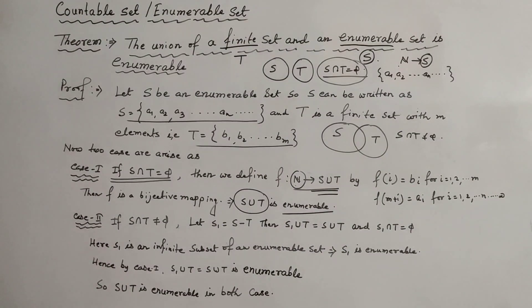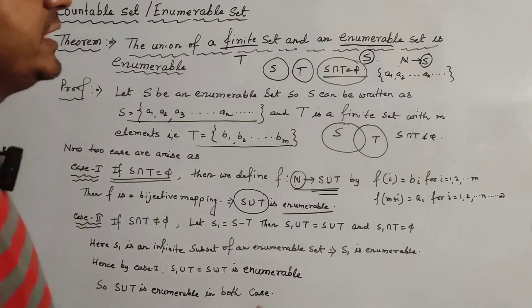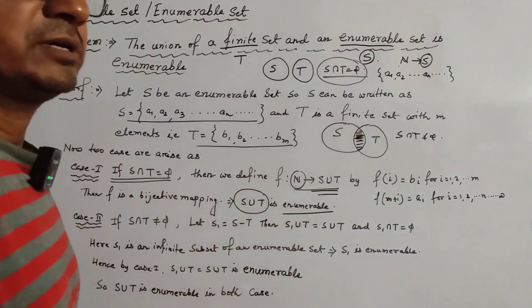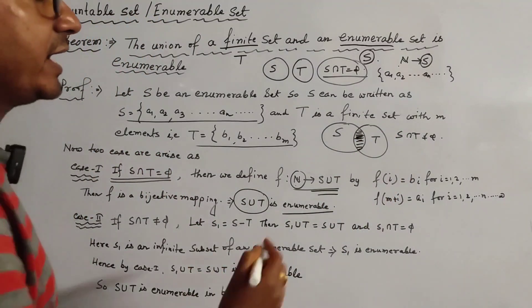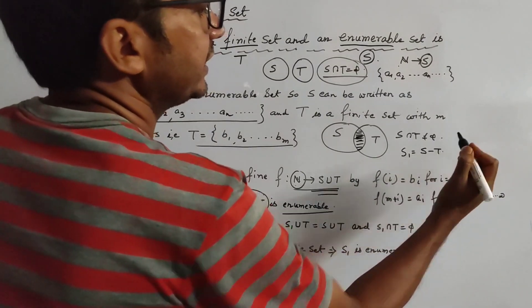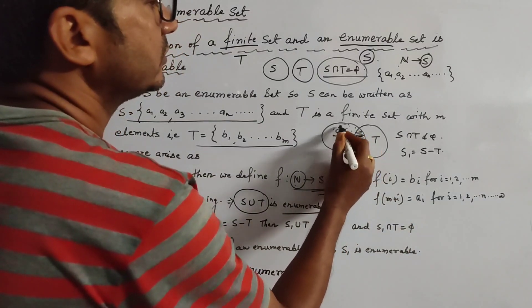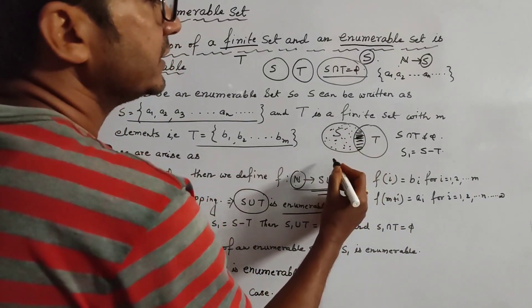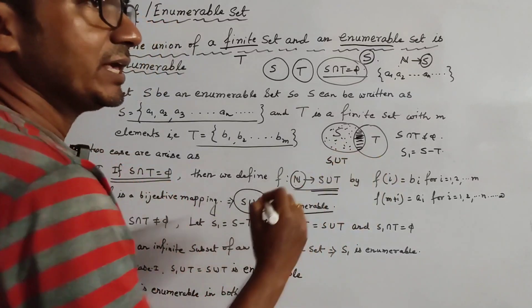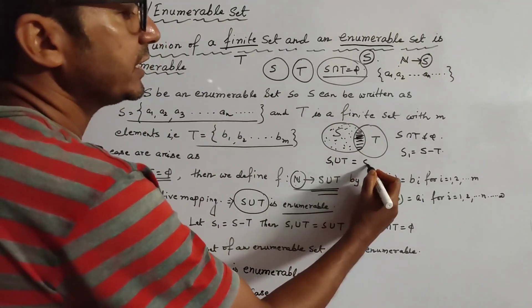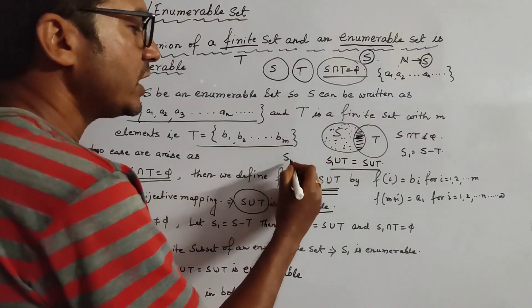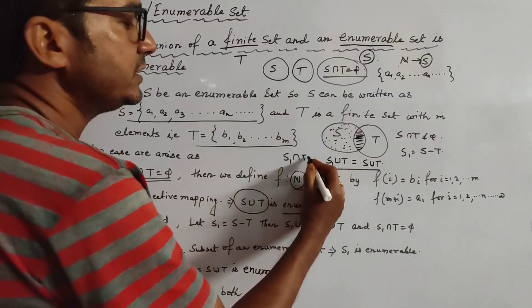Now, if S ∩ T ≠ ∅, we define another set S₁ = S \ T (S minus T). Clearly, S₁ ∪ T = S ∪ T as well. But here, S₁ and T are disjoint sets.